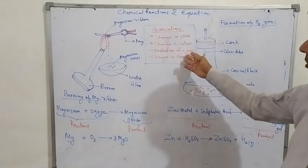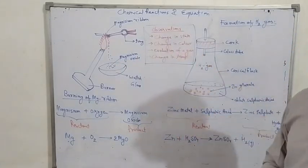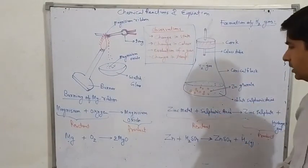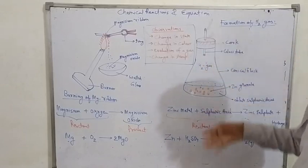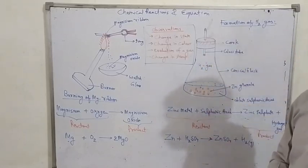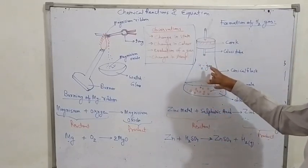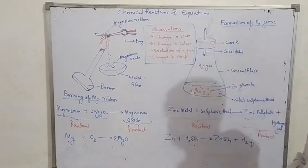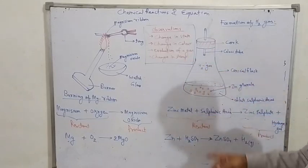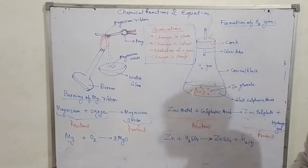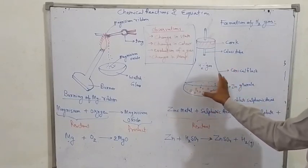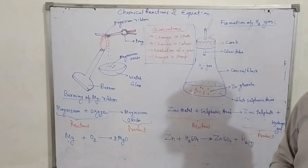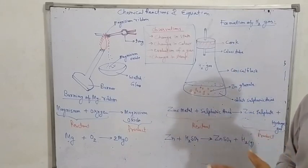Next is the evolution of gas. In this reaction, when zinc reacts with sulfuric acid, there is an evolution of hydrogen gas — hydrogen gas is evolved, which also indicates a chemical change. Next is the change in temperature. When zinc metal reacts with sulfuric acid, you can observe a slight change in temperature.